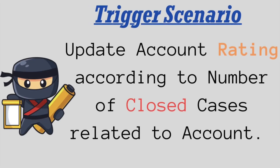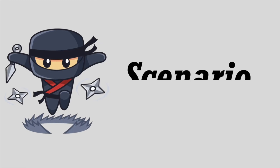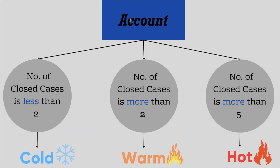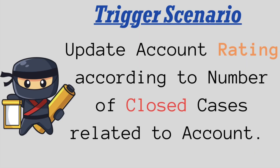Today's requirement is we need to update Account Rating based on the number of closed cases related to an account. Let me make it simple with a flowchart. If the account has fewer than two closed cases, then account rating should be Cold. If the number of closed cases is more than two, the rating should be Warm. And if the number is more than five, the rating should be Hot. You can modify these conditions as needed — I chose these so I can show the working of the code easily.